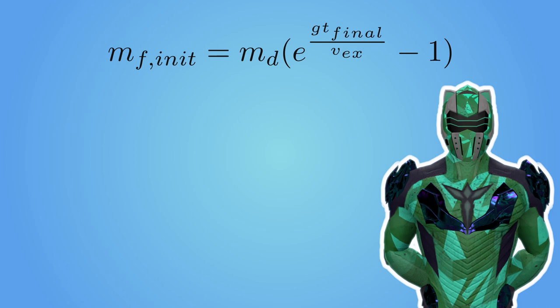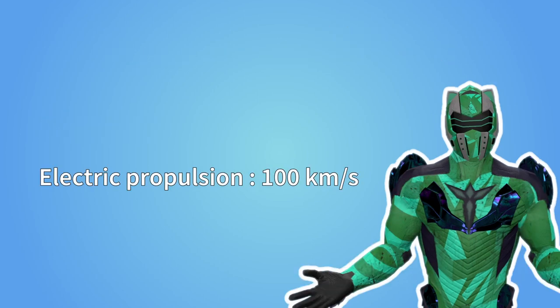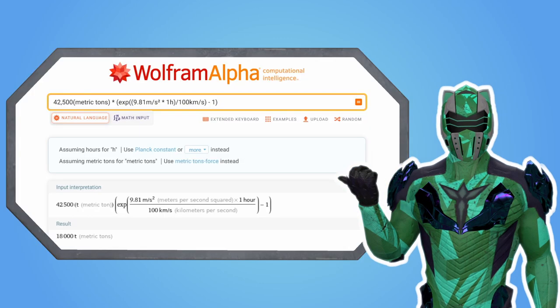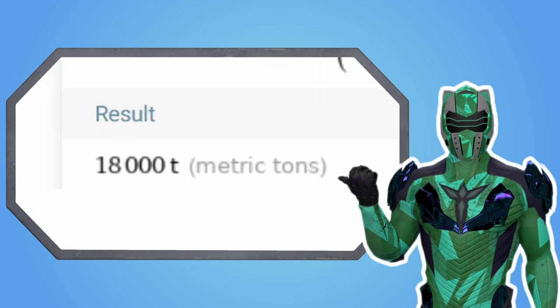As I said, the biggest rocket engines we currently have expel gas at about 4.5 kilometers per second. But we also have electric propulsion engines that can go up to 100 kilometers per second. What if the Bastion uses electric propulsion engines massively scaled up? Let's plug that new exhaust velocity into Wolfram Alpha. Now we get 18,000 tons of fuel.